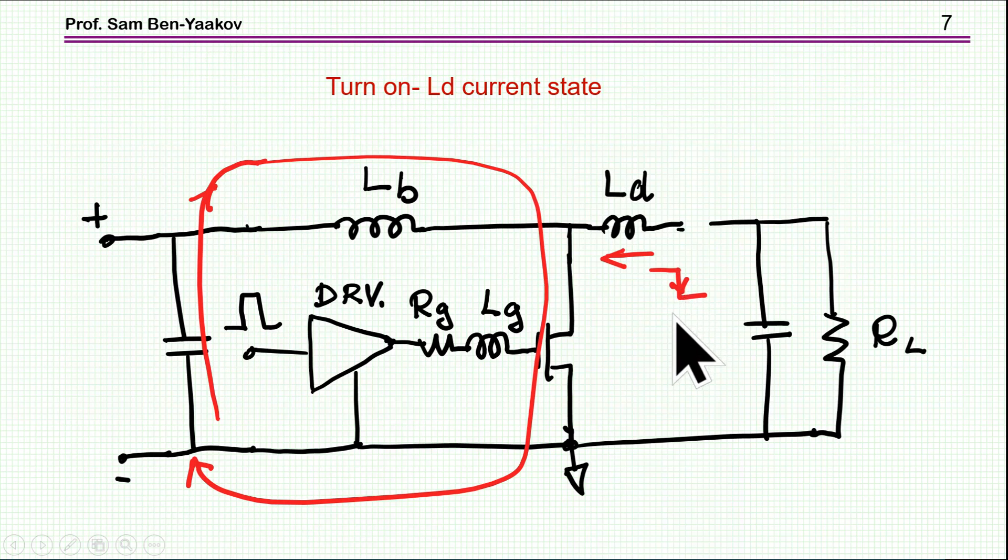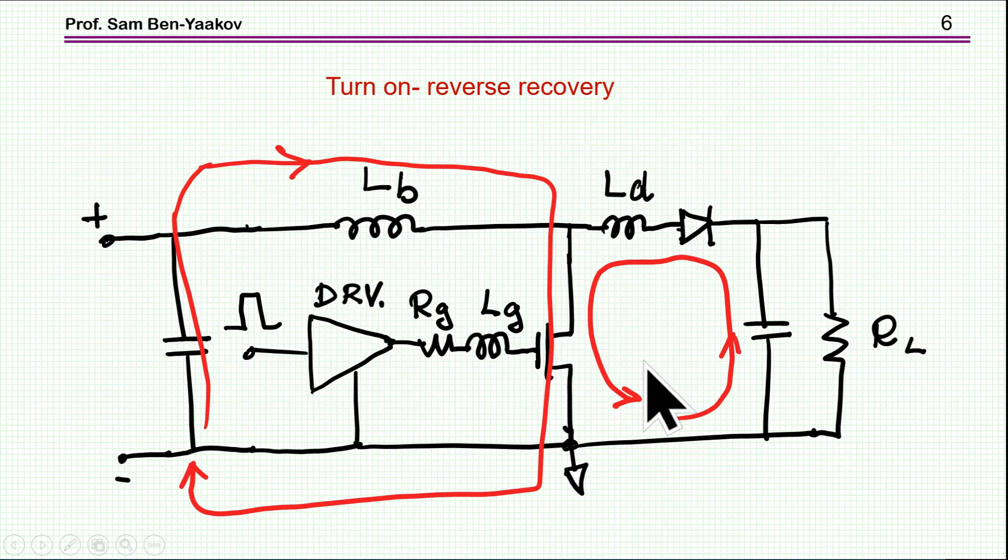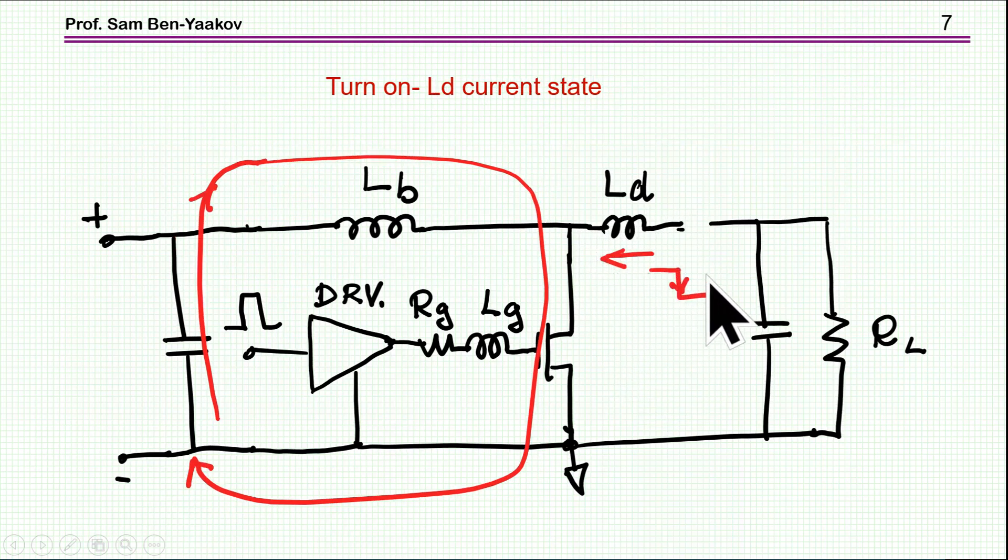So there is a difference between this loop and this loop. Here, this is an uninterrupted switching loop. We have current going one direction, the other direction. But here, we have interruption. We have a current passing through the diode. And then, all of a sudden, it will stop. So there is a really big difference between these two situations.